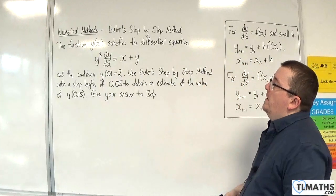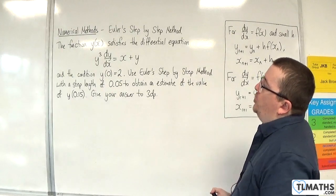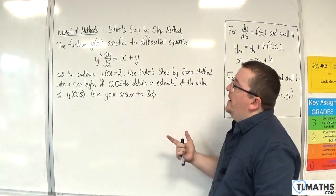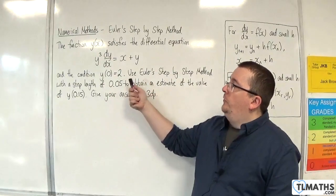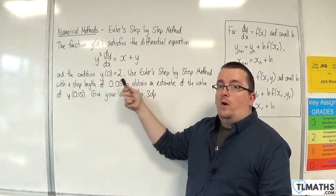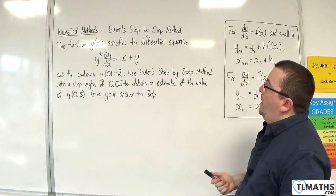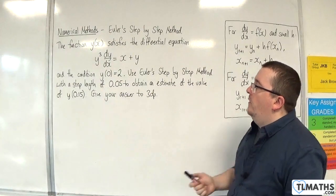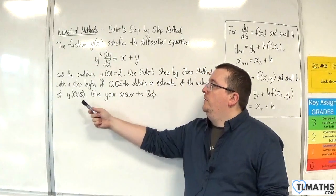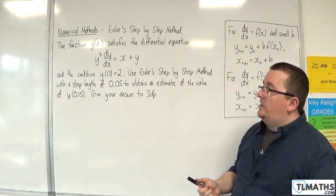In this video we have the function y of x satisfies the differential equation y³ dy/dx equals x plus y, and the condition y(0) equals 2. Use Euler's step-by-step method with a step length of 0.05 to obtain an estimate of the value of y(0.15). Give your answer to three decimal places.